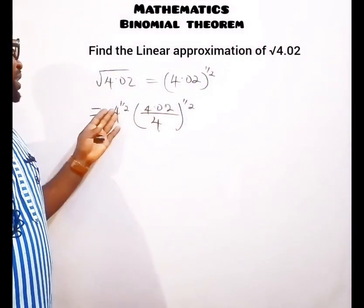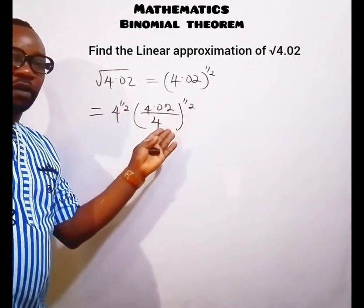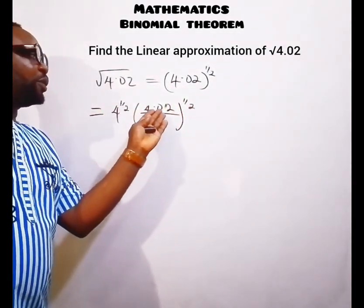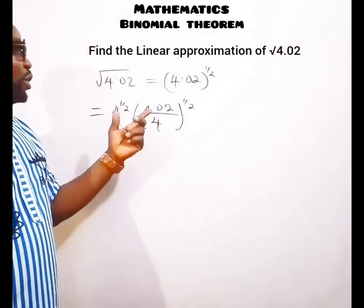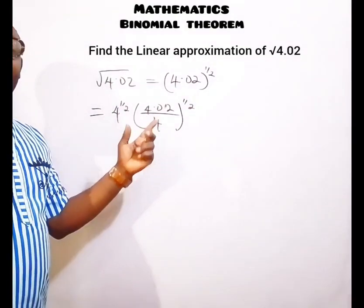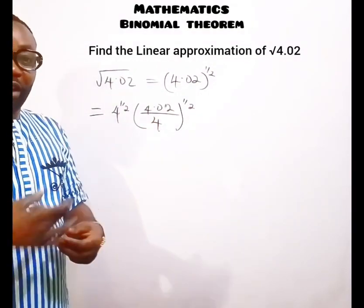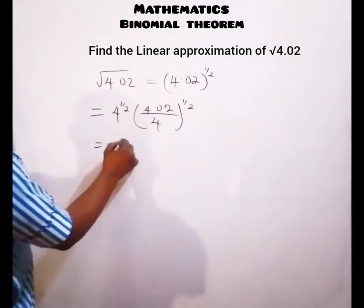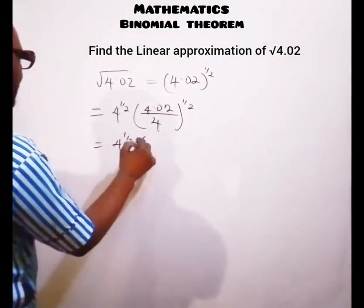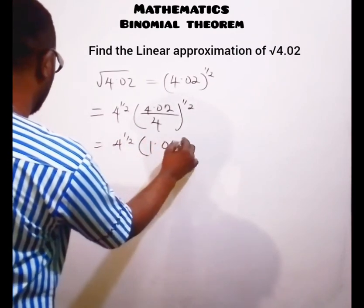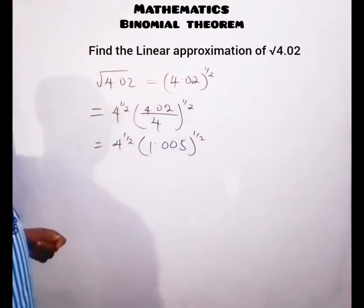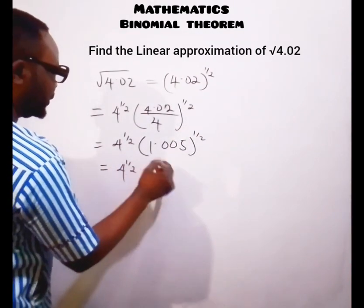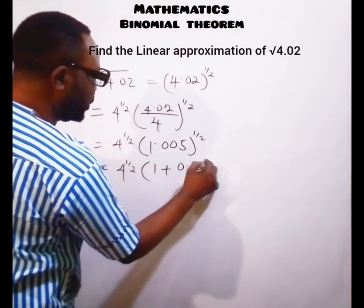This transition means 4 raised to the power of one-half divided by 4 raised to the power of one-half, leaving 4.02 raised to the power of one-half. Dividing 4.02 by 4 gives 1.005, so we get 4 raised to the power of one-half into the bracket of 1.005 raised to the power of one-half, which is 4 raised to the power of one-half into (1 plus 0.005) raised to the power of one-half.